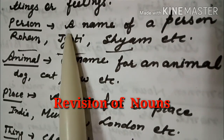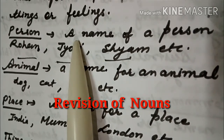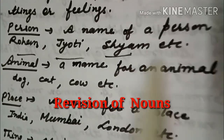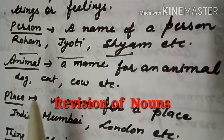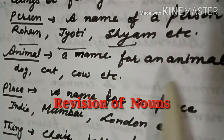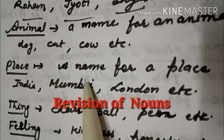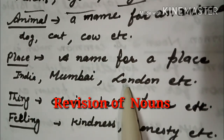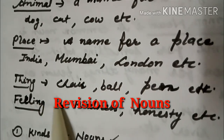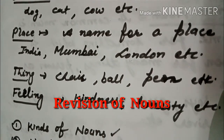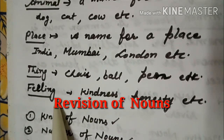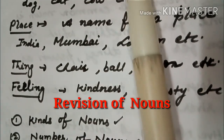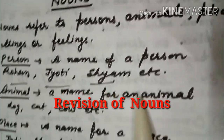For example — person: you can take the name of any person, for example Rohan, Jyoti, Siam, Peter. Animal: name of any animal, for example dog, cat, cow. Place: name of any place, for example India, Mumbai, London. Thing: name of anything — chair, ball, pan, pencil, table. Feeling: any feeling — kindness, honesty, happiness. So noun refers to persons, animals, places, things, or feelings.